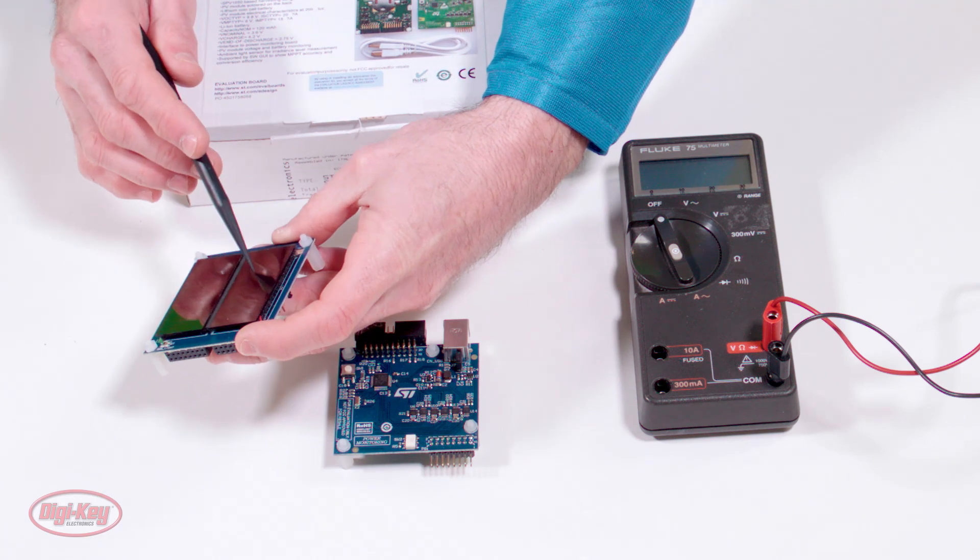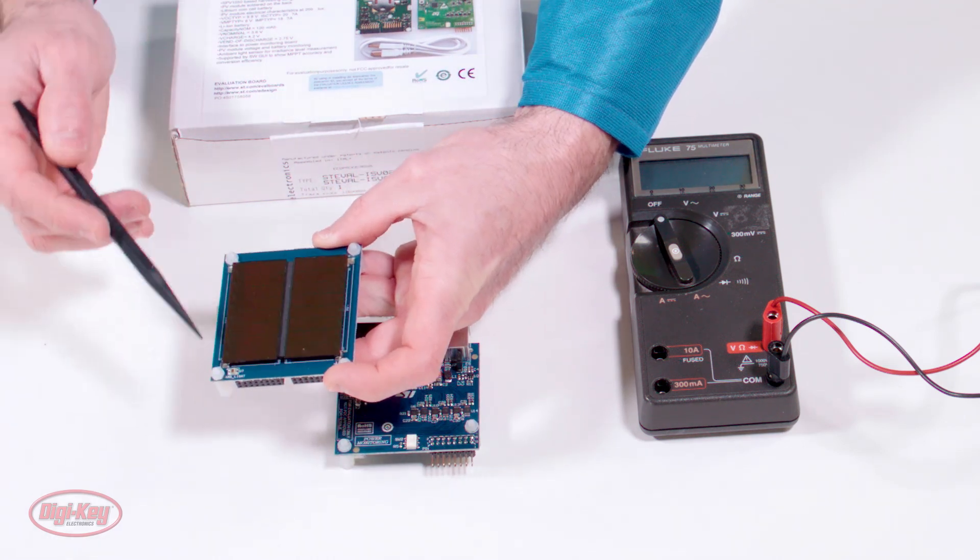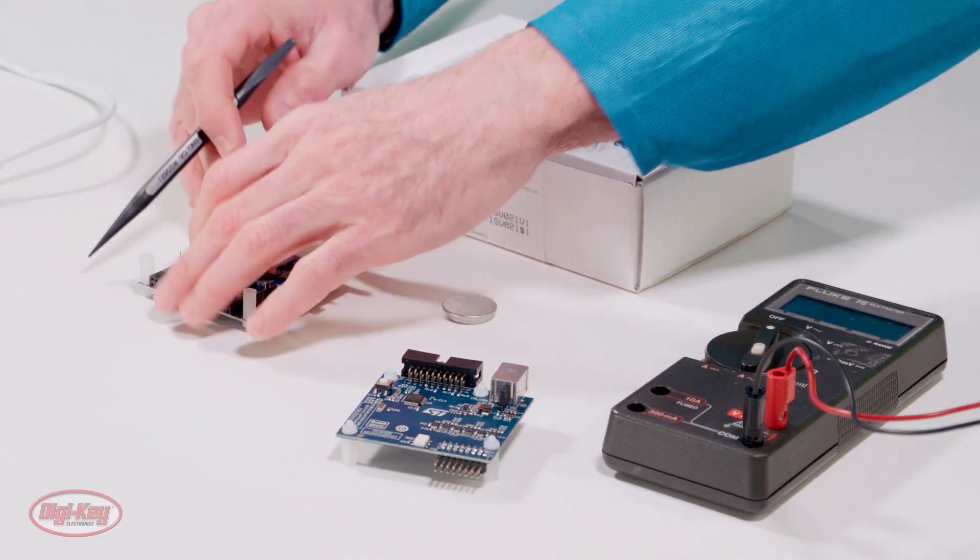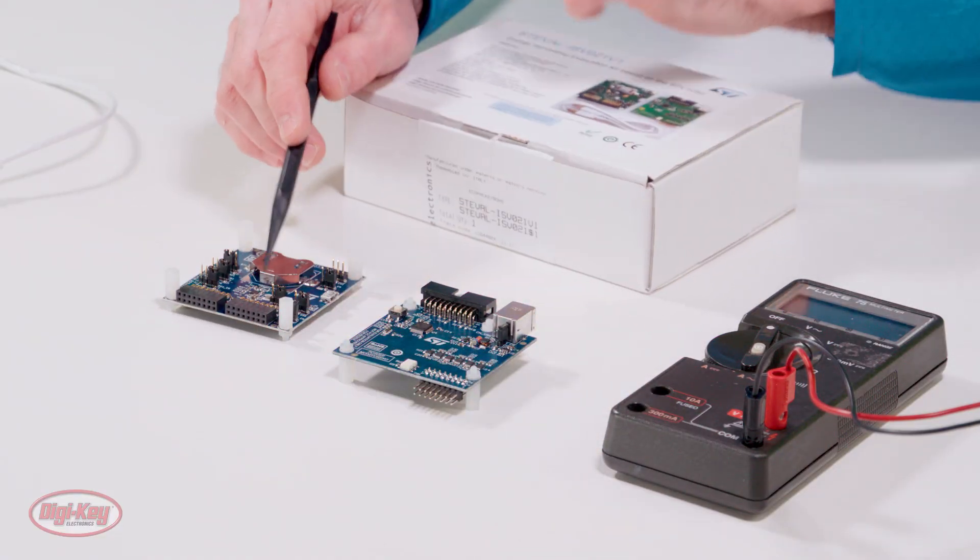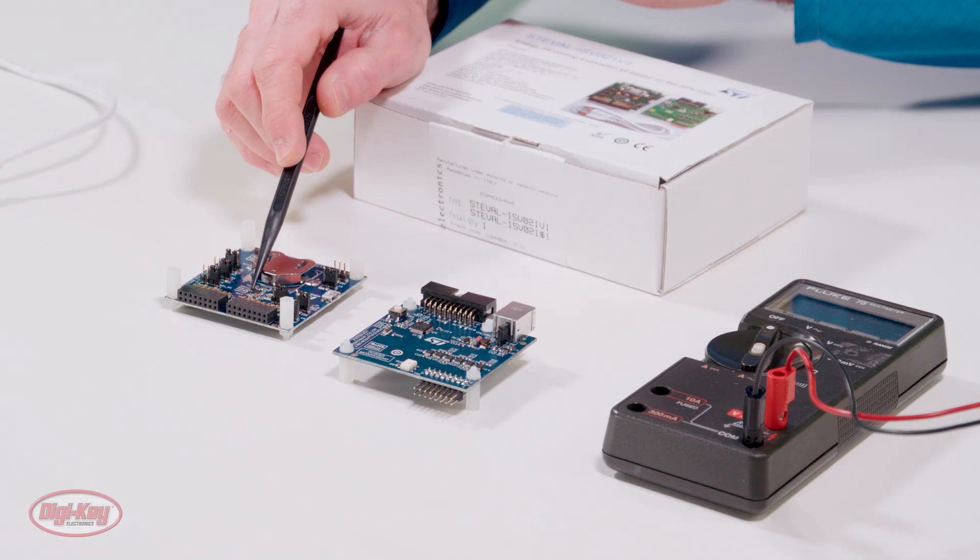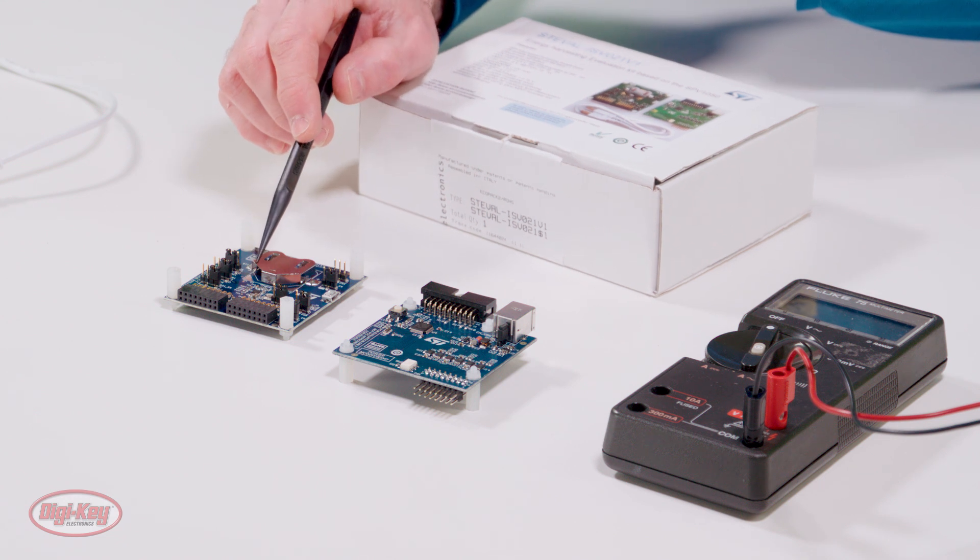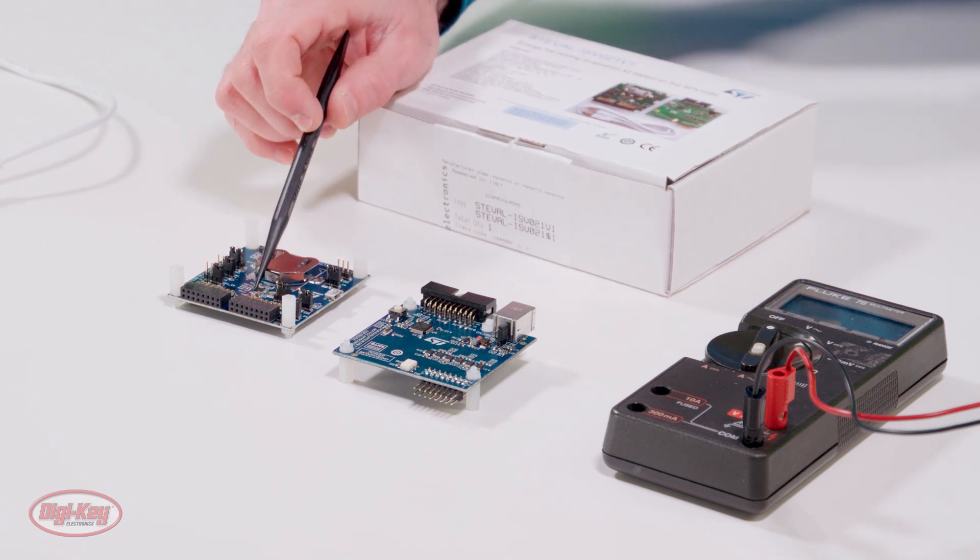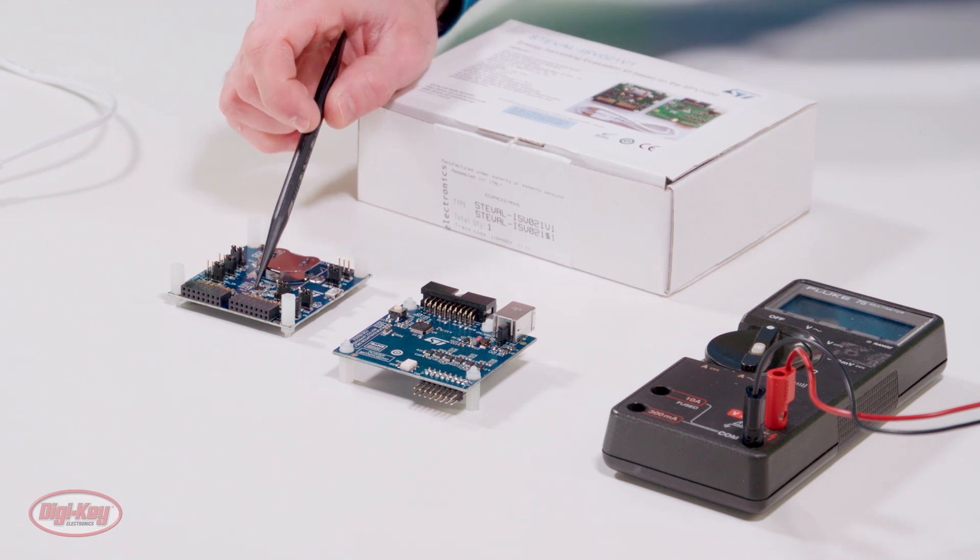Taking a closer look at the harvesting module, we can see two solar panels and an ambient light sensor, which is used by the GUI for displaying the actual power versus voltage curve according to the current ambient light conditions. U2 is the SPV1050. This IC is an ultra-low power and high-efficiency energy harvester and battery charger, which implements the maximum power point tracking or MPPT function and integrates the switching elements of a buck-boost converter.